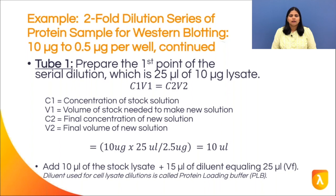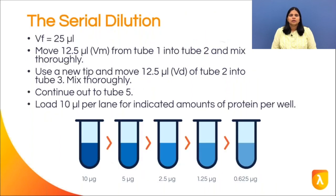Therefore, we add 10 microliters of the stock and 15 microliters of the diluent to make the first tube. To make the rest of the tubes, we first add 12.5 microliters of diluent to each tube, then move 12.5 microliters from the first to the second tube and so on until we reach the fifth tube. Remember to mix each tube thoroughly before moving to the next tube. At the end, we will have 12.5 microliters of solution in each tube and can take 10 microliters to load a protein gel.